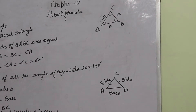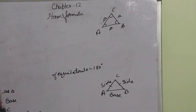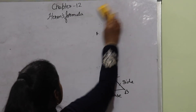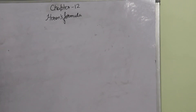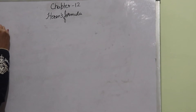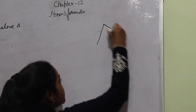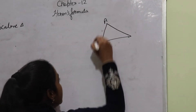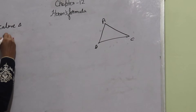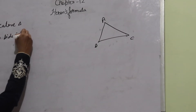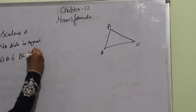Now we come to the third type, that is the scalene triangle. In this scalene triangle, this is A, this is B, and this is C. No side is equal — meaning AB is not equal to BC, and not equal to AC.